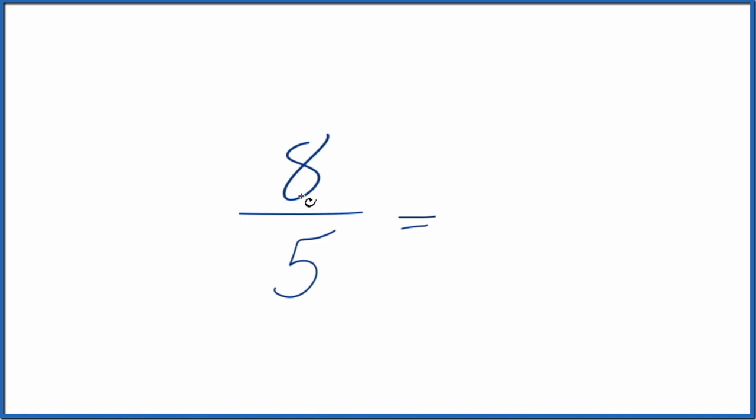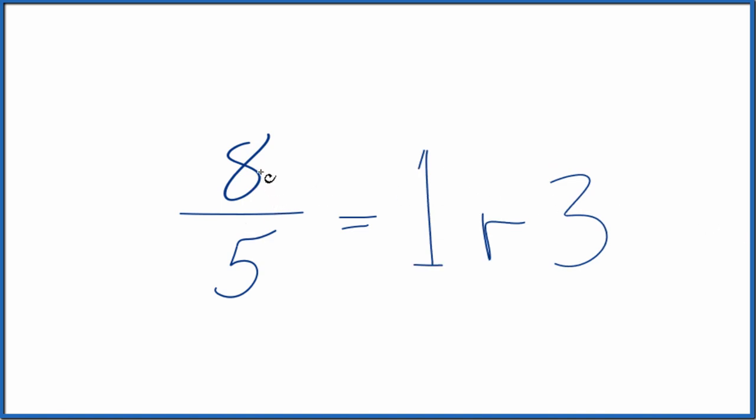So 5 goes into 8 just one time, and we have a remainder of 3. So the fraction 8 fifths, we have 1 remainder 3. Now we can write our mixed number.